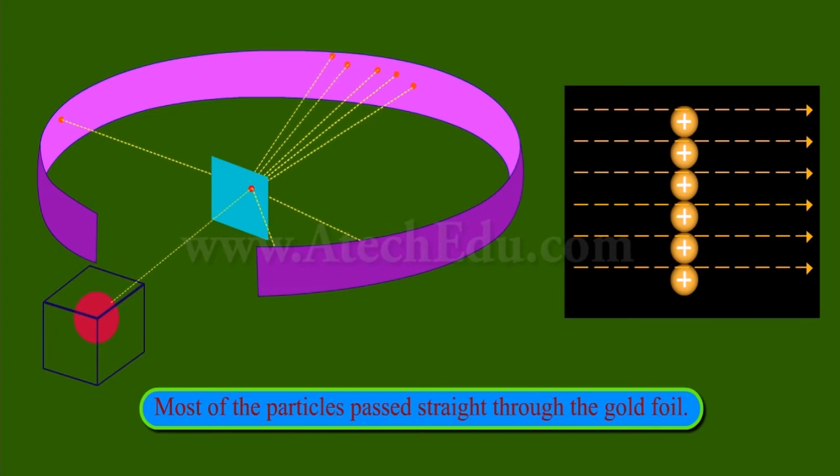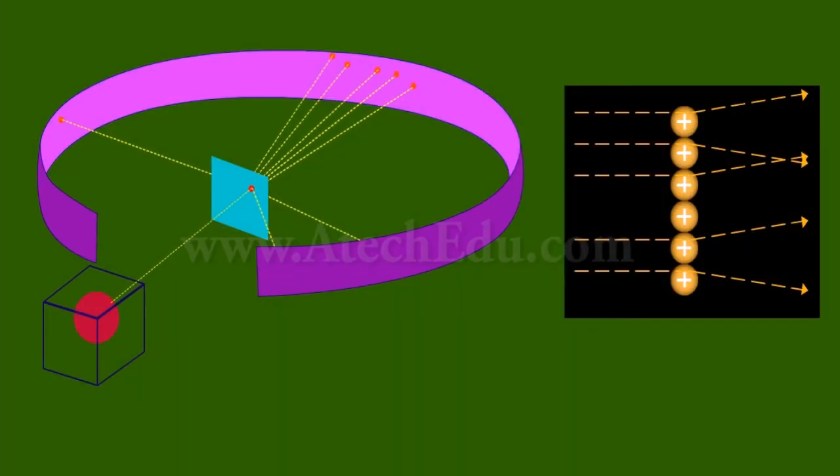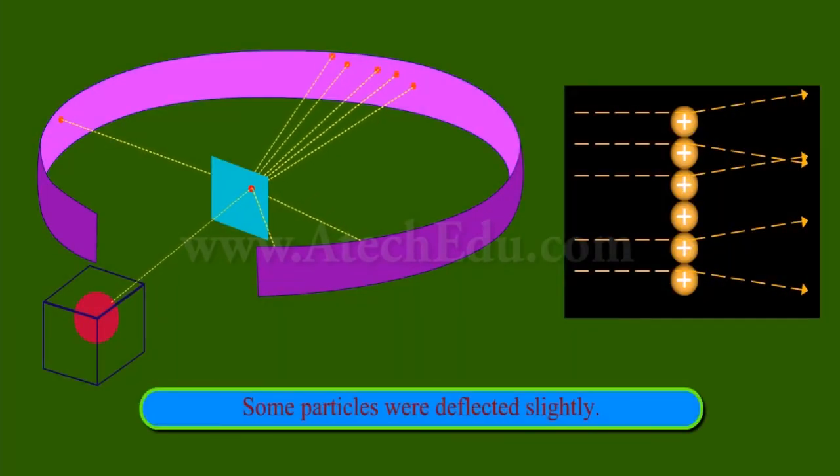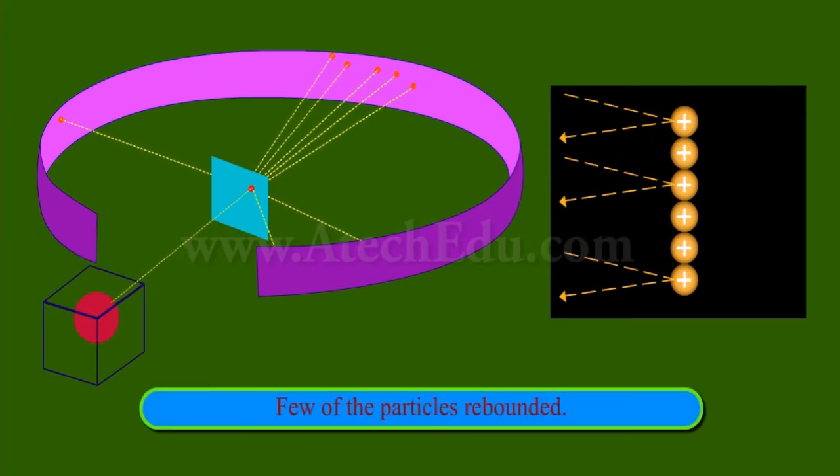Most of the particles passed straight through the gold foil. This means that most of the space inside the atom is empty. Hence, these alpha particles pass away without any barrier. Some particles were deflected slightly.